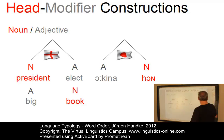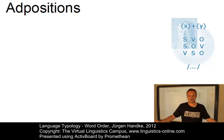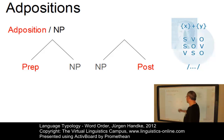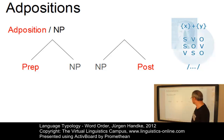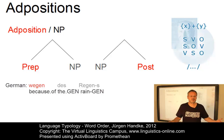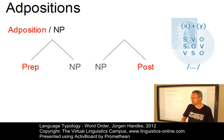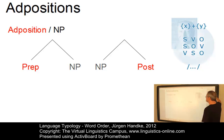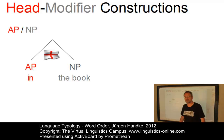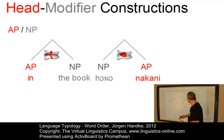Another well-known head-modifier pattern concerns adpositions. Adpositions is the cover term for, on the one hand, prepositions, where the adposition precedes its noun phrase, or postpositions, where the adposition follows its noun phrase. The adposition is always the head of such constructions because it determines the choice and perhaps the case of the noun phrase. In English we have prepositions only — 'in the book' — where the adposition precedes its modifier. In Japanese it is the other way around: 'hongo nakani,' where the noun phrase, the modifier, precedes its head. So Japanese has postpositions.